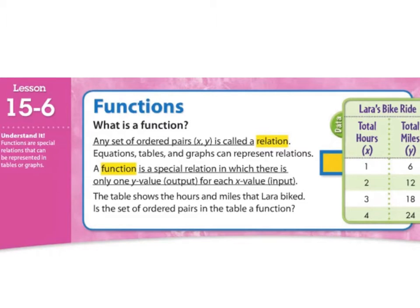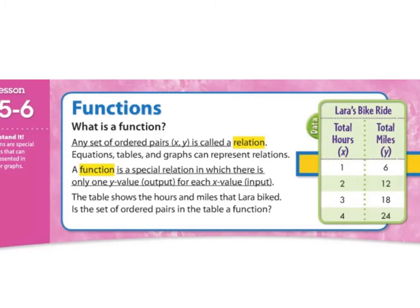The table here shows the hours and miles that Lara biked. Is the set of ordered pairs in this table a function? Okay, so I see that there should only be one Y value, which is over here, for each X value. So if there's an X value multiple times, so let's just say there's one listed multiple times, and there's a different number on the Y value for that, then it's not a function. But let's see.